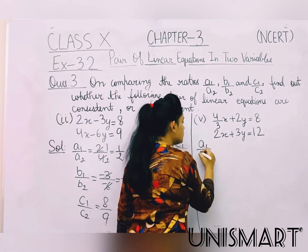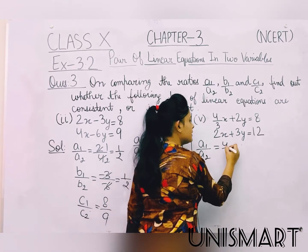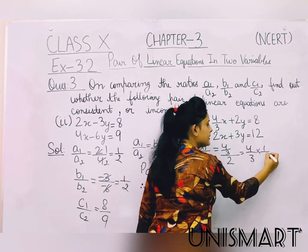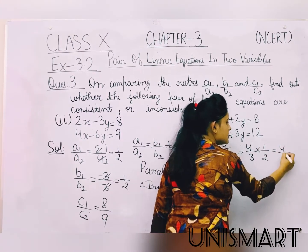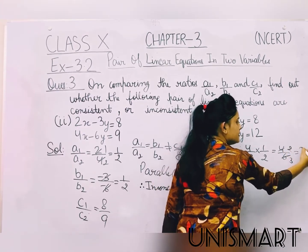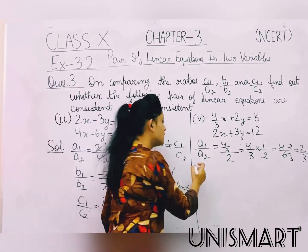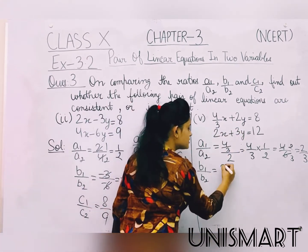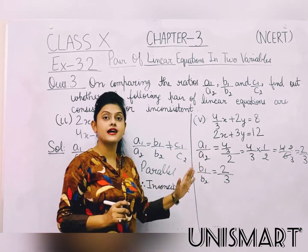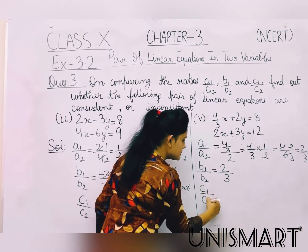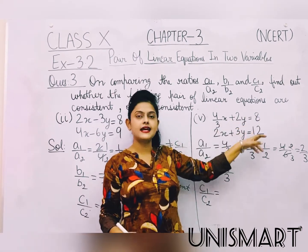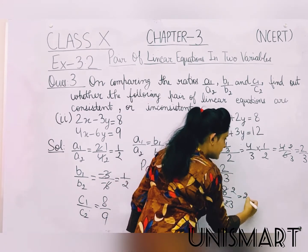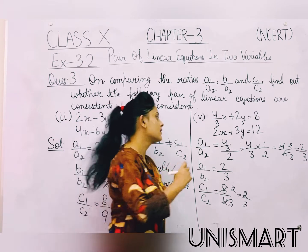So a1 upon a2: a1 is 4/3 and a2 is 2. Taking the reciprocal, we get 4/3 multiplied by 1/2, that is 4 by 6, which simplifies to 2 by 3. Now b1 upon b2: b1 is 2 and b2 is 3, so that gives 2 by 3. And c1 upon c2: c1 is 8 and c2 is 12, which simplifies to 2 by 3.